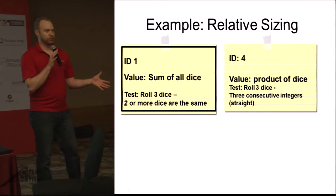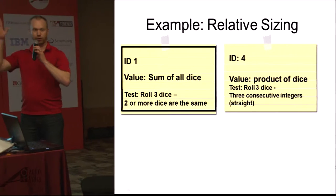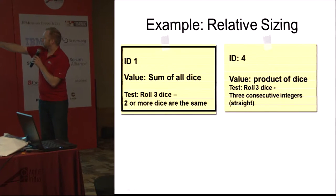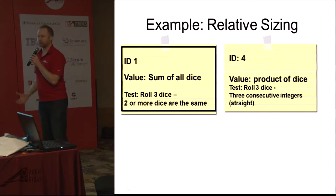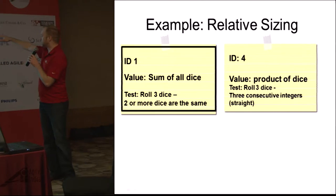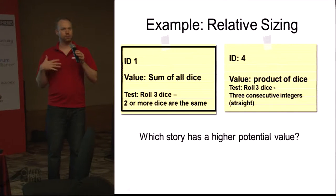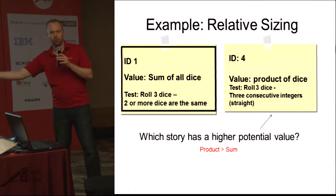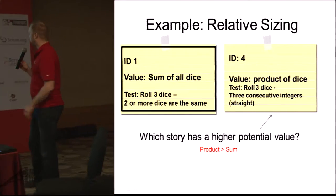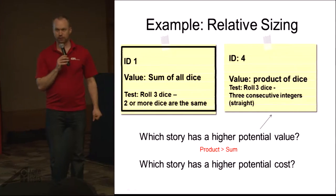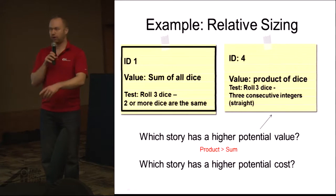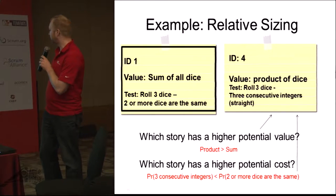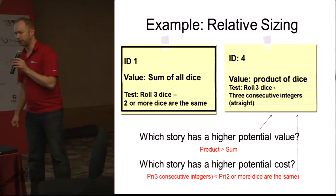Relative sizing — we're all familiar with relative sizing in Agile and comparing user stories to figure out how big they are. On the left, user story number one has the value of the sum of all dice. On the right, user story four has the value as the product of all dice — you multiply them together. Which probably has a higher value? Story four, because the product will more often have a higher number. So story four has higher potential value, and also higher potential cost — it's probably harder to get three consecutive integers on the dice.